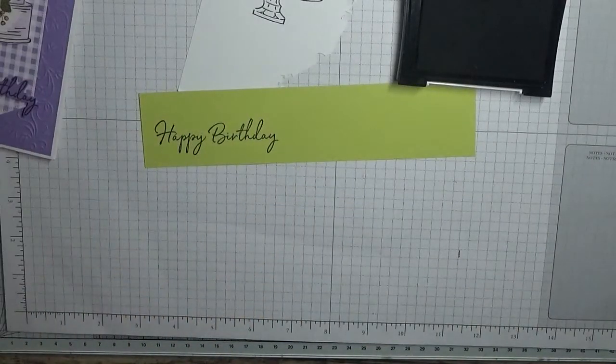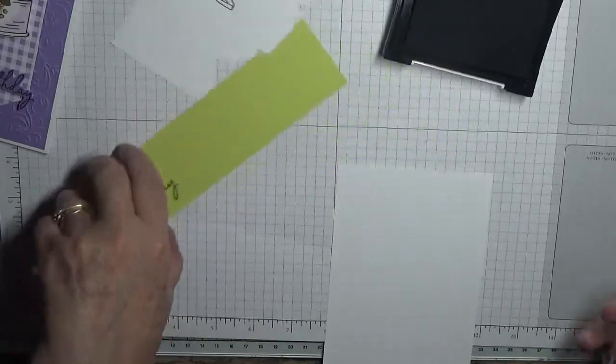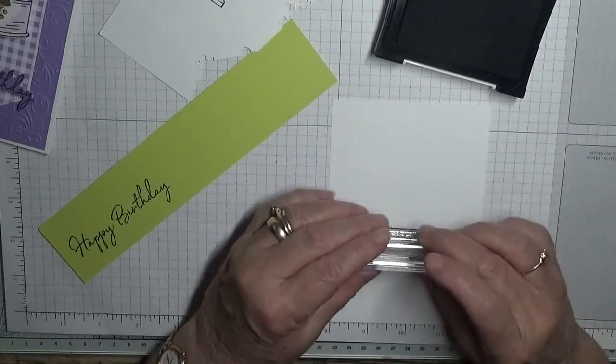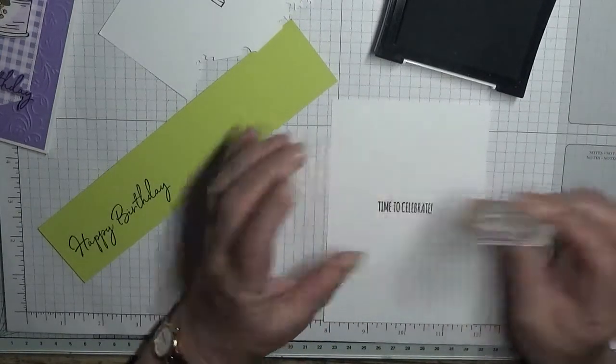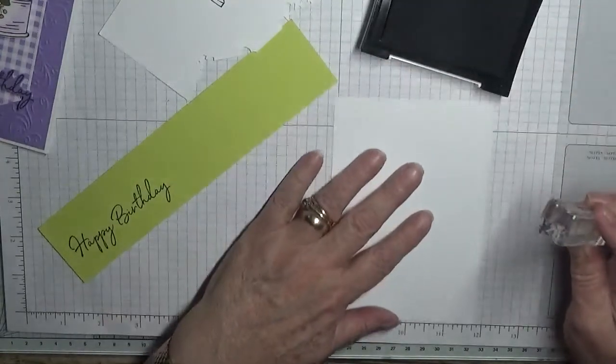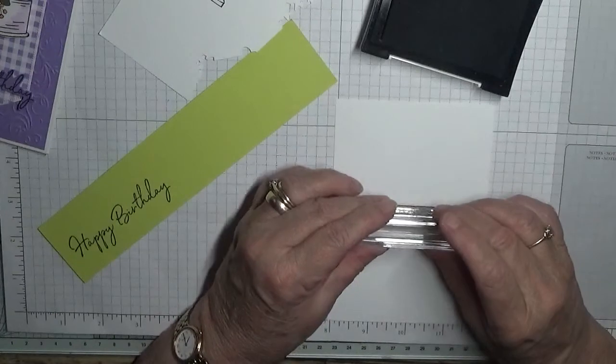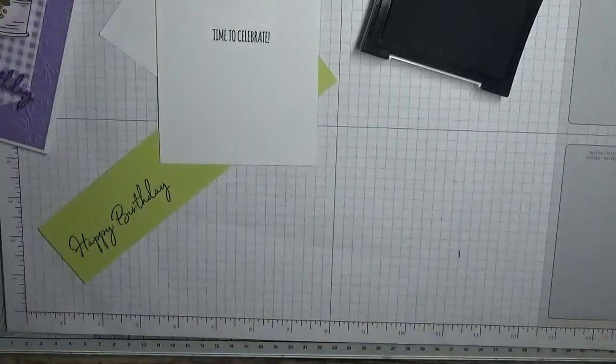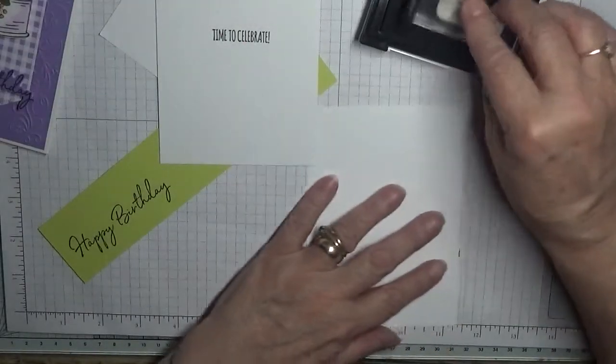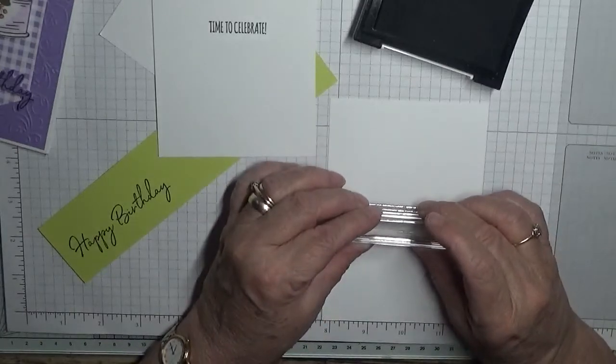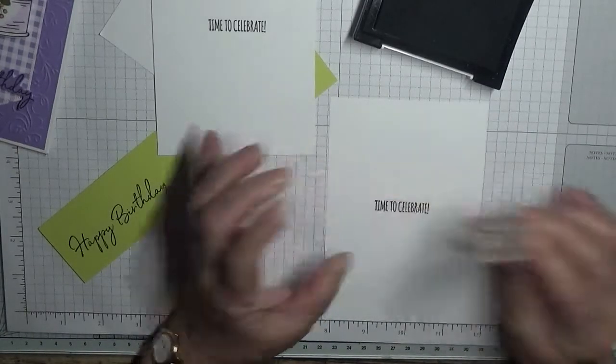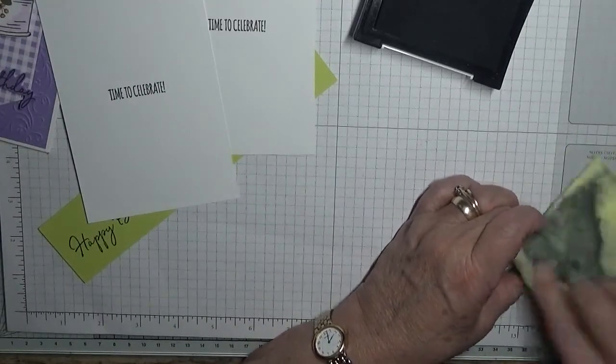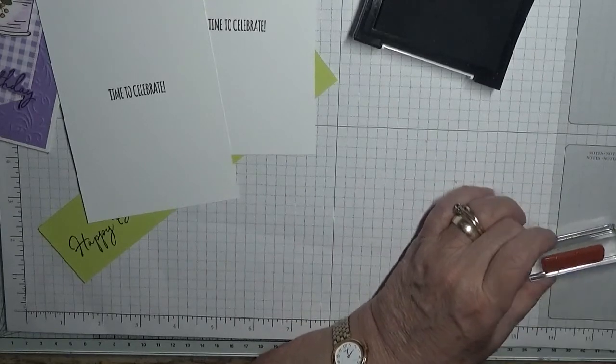And then with our white piece we're going to stamp time to celebrate, just in the middle. Not very straight. That's better. I'm going to do it again because the purple one hasn't got an inside in. I did that. I made a few cards and never did the insides.